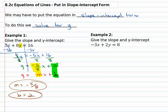So by solving the equation for y we're now in slope-intercept form and it was really easy to quickly find the slope and y-intercept. Let's look at another equation. Here we have negative 3x plus 2y equals 8.